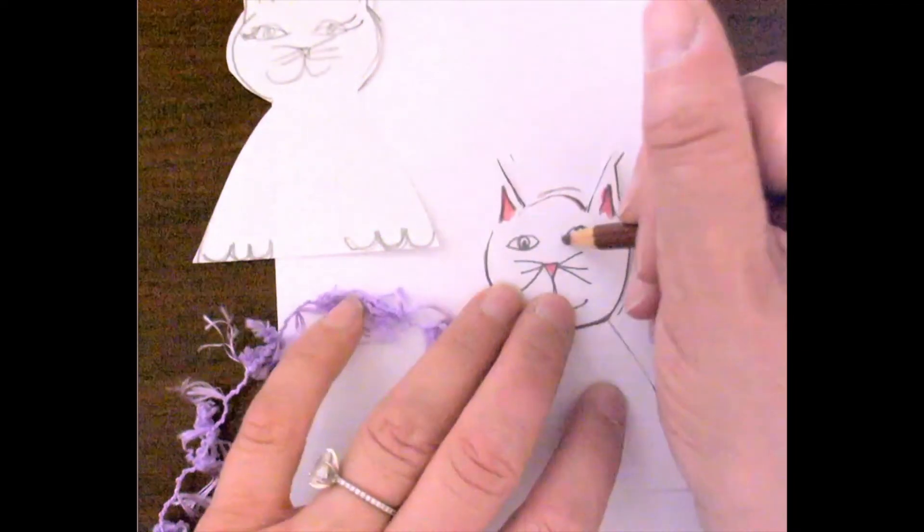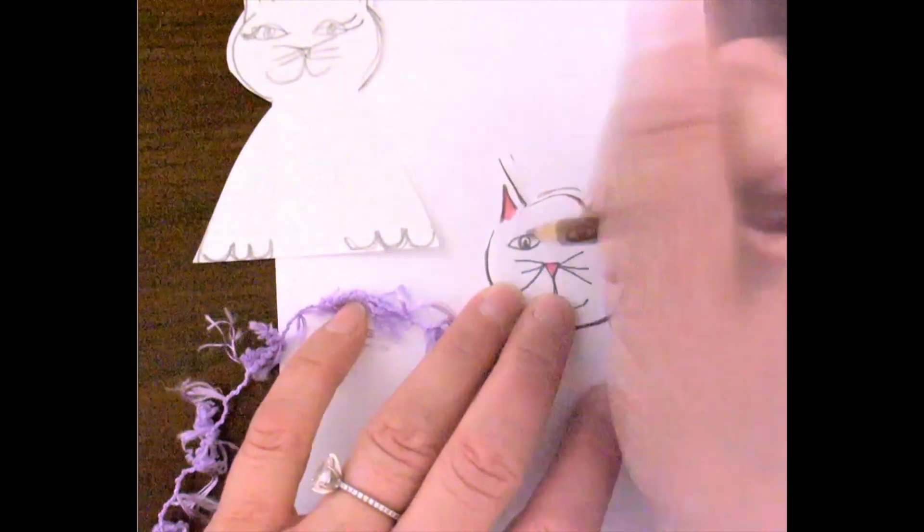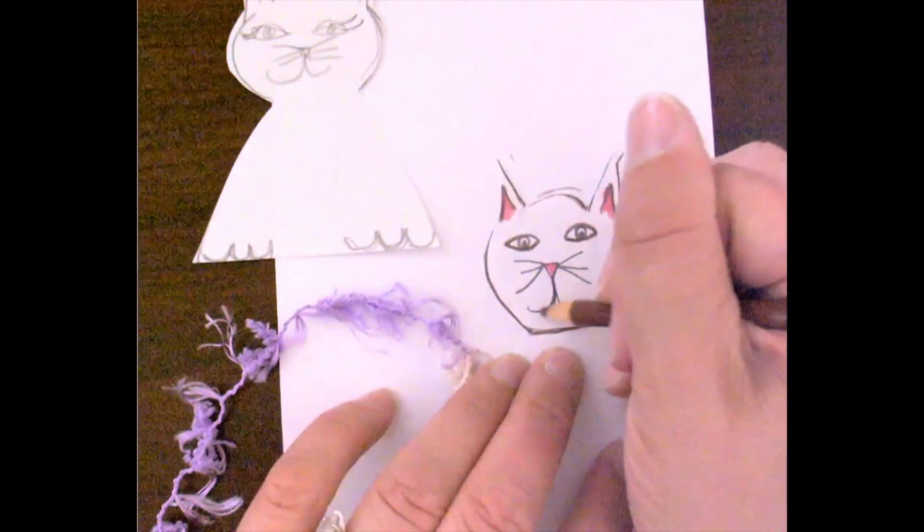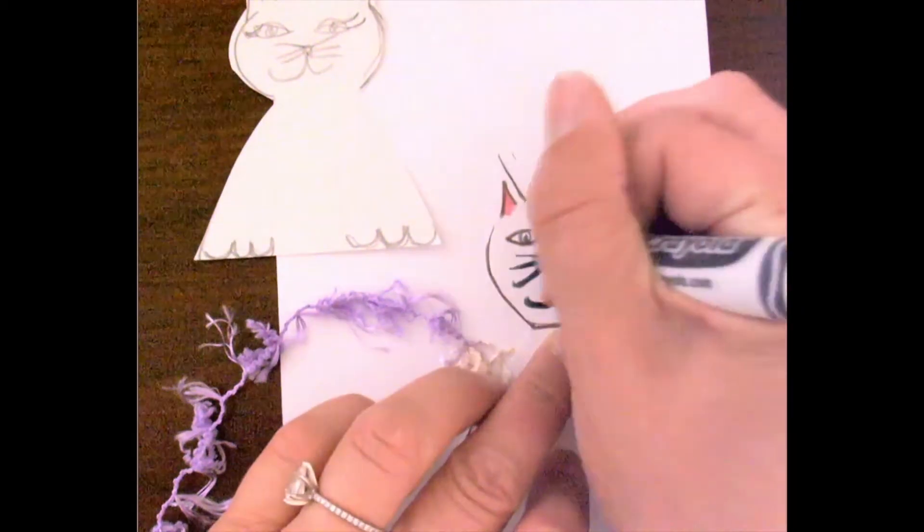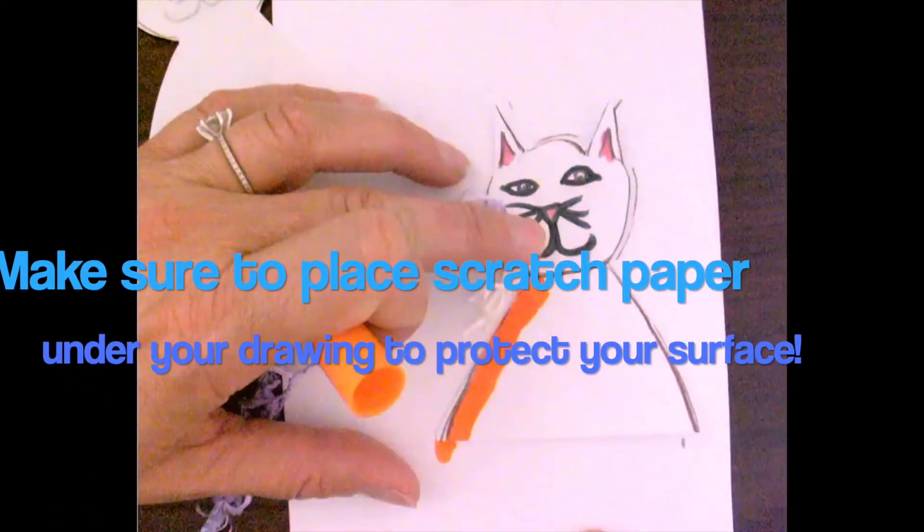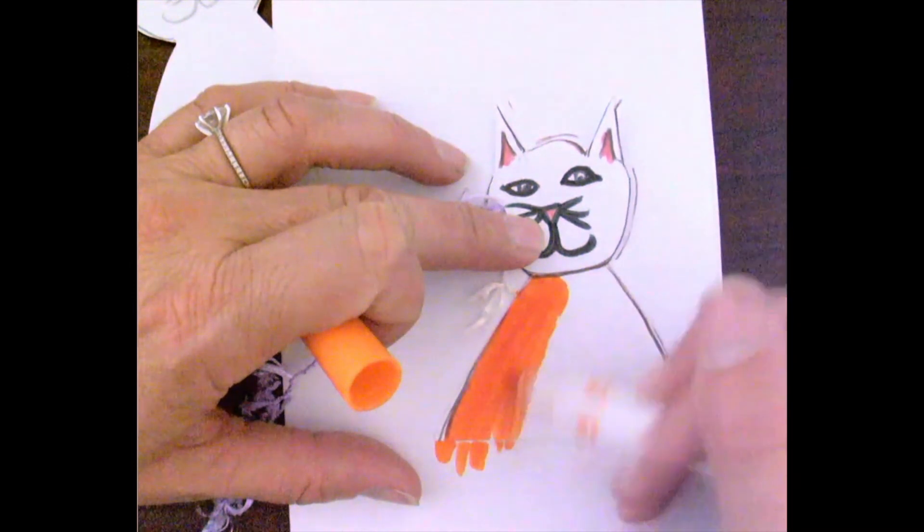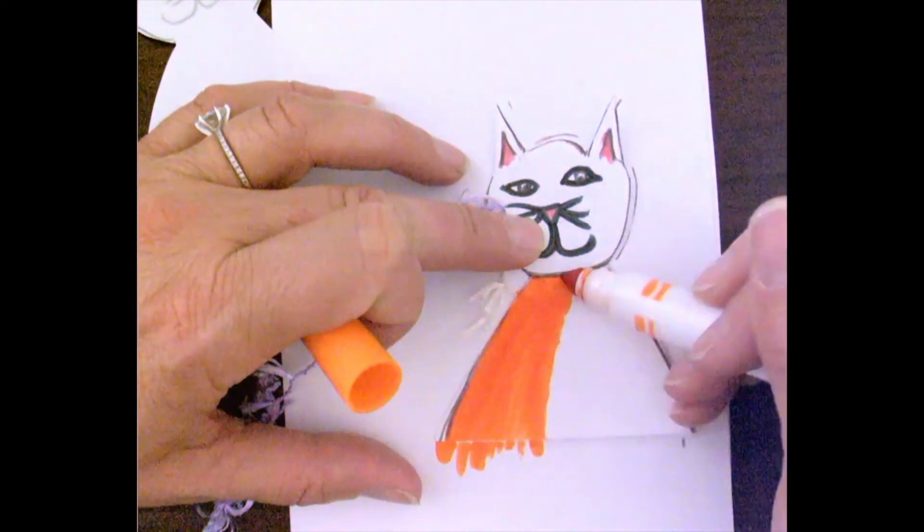And then I'm going to color Mr. Cat. And you don't have to use traditional colors. You can do a yellow cat, a blue cat, a purple cat, it's entirely up to you. Notice I put paper down underneath my cat because I don't want to damage my desk. I suggest you take some old paper, scratch paper, and put it under as well.